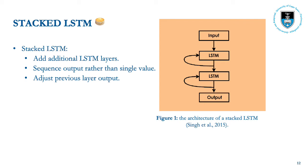The stacked LSTM adds multiple LSTM layers to a traditional LSTM. This is implemented by feeding the sequence to the next LSTM layer, which requires the previous layer output to be slightly adjusted from a single scalar to a vector value.